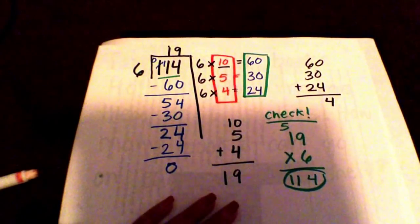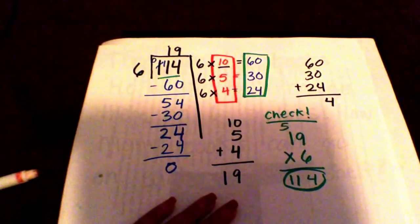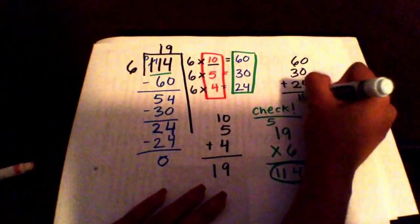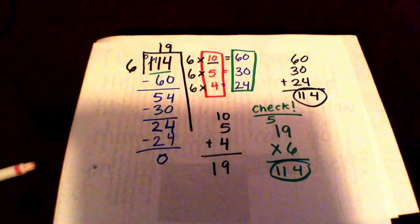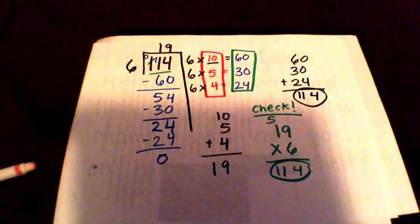Six plus 3 is 9, plus 2 is 11. And that also matches. So that's how you do division using partial quotients.